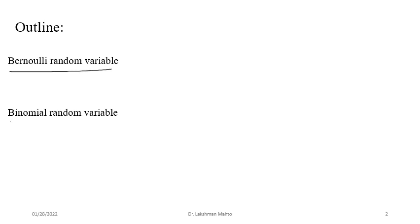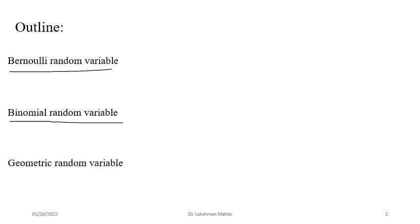Next we will discuss the binomial random variable. It is a generalization of the Bernoulli random variable in the sense that if you have n number of Bernoulli trials, and you count the total number of successes, at the same time you also get the total number of failures. The complete observation is classified into two categories — success and failure — so that is a binomial situation. The count of successes follows what we call a binomial distribution.